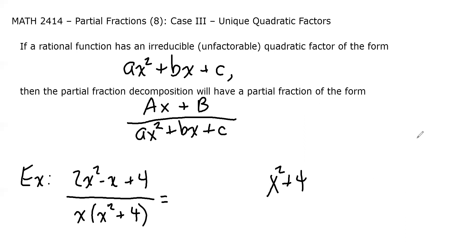So relative to the real numbers, x² + 4 is prime. I say that because if we allow complex numbers, then technically everything is factorable. We're not going to go there right now.